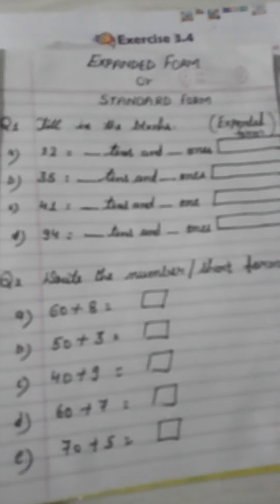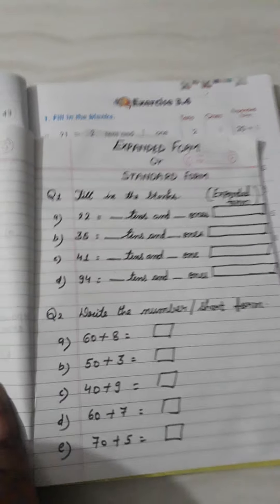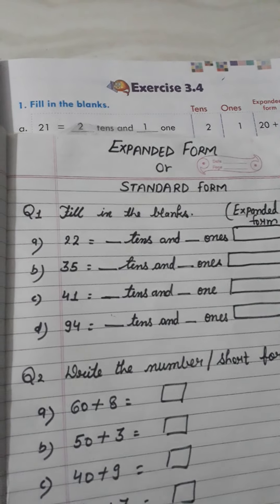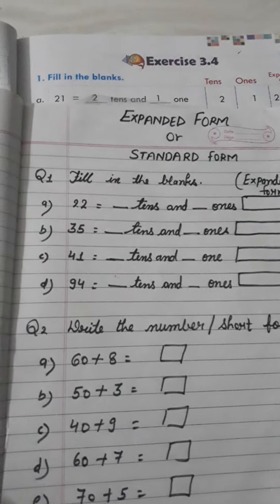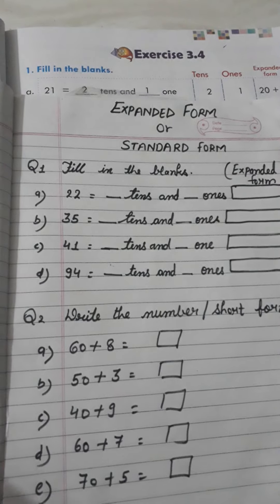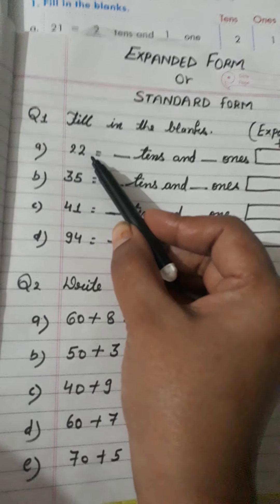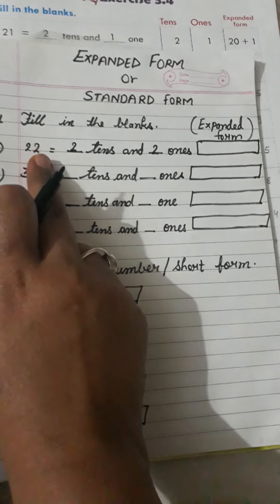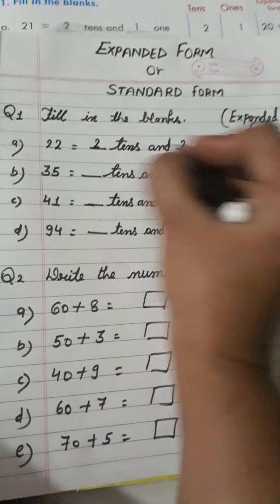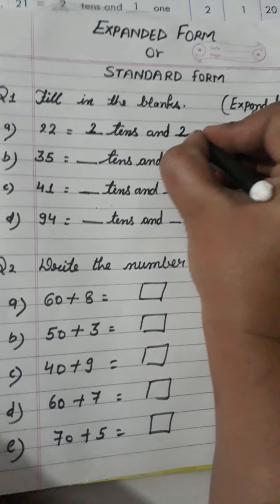On the basis of these questions I have made a revision also. Just look here. This is your expanded form — we call it standard form. In this exercise we have to fill in the blanks. First we will separate the tens and ones, then we will write the expanded form. In question number 1, the number is 22 — 2 tens and 2 ones. The expanded form of this number is 20 plus 2.